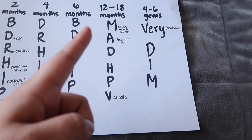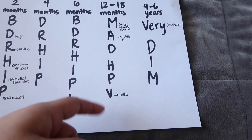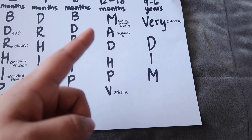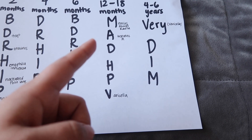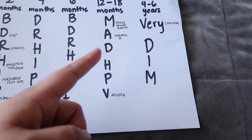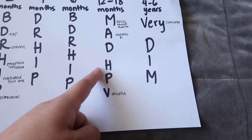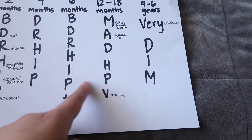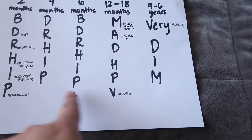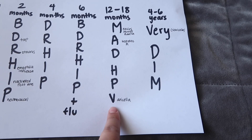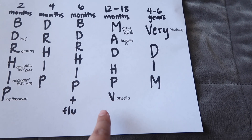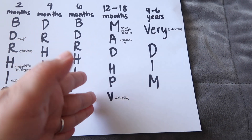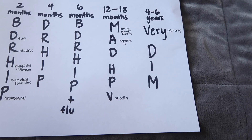At 12 to 18 months, you're going to have a couple of new vaccines. First, it's going to be MMR — measles, mumps, and rubella. Then you're going to have Hepatitis A, DTaP, Hib (Haemophilus influenzae), the Pneumococcal vaccine, and V for Varicella. You can use the mnemonic 'MAD HPV' for 12 to 18 months.